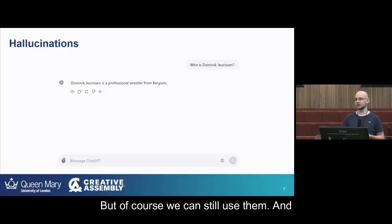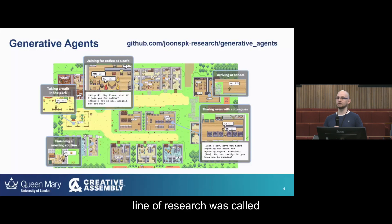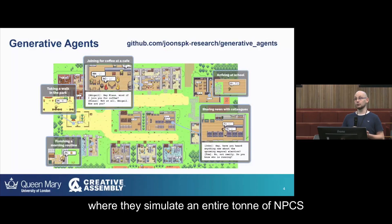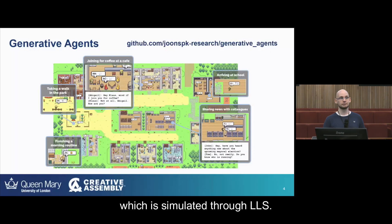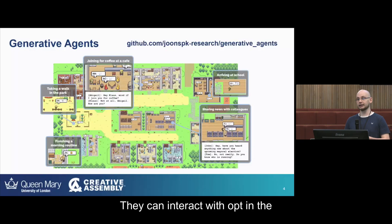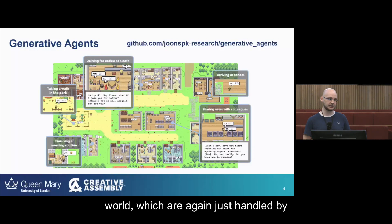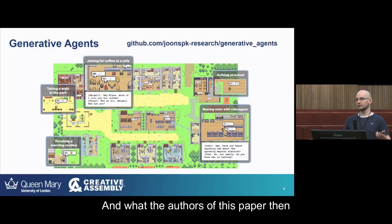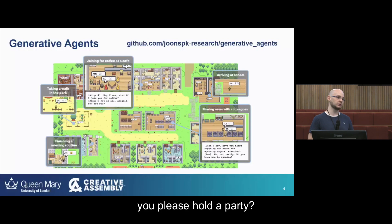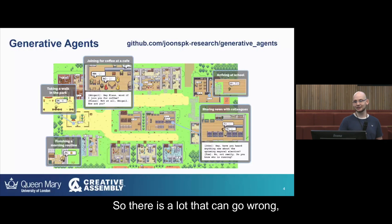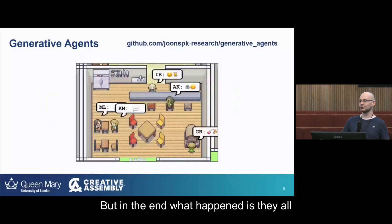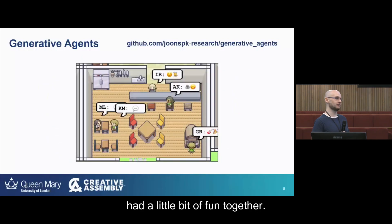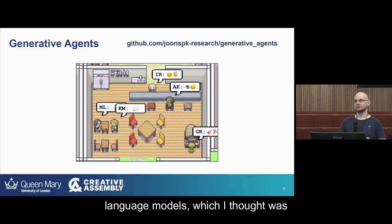We can still use them, and one paper that inspired my entire line of research was called Generative Agents, where they simulate an entire set of NPCs just using large language models. The NPCs talk with each other, have thoughts, and can interact with objects in the world — all handled by large language models. The authors then asked one of the NPCs to please hold a party. A lot could go wrong, such as the NPC forgetting to invite people, or others forgetting they were invited. But in the end, they all went into the room and had fun together. I thought that was extremely impressive.